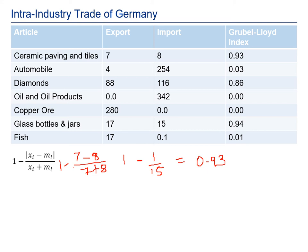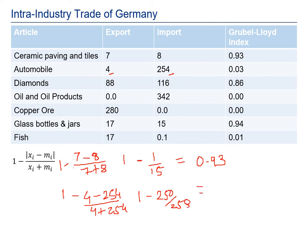For the automobile sector: exports are 4 and imports are 254. Applying the formula: 1 − |4 − 254| / (4 + 254) = 1 − 250/258. Dividing 250 by 258 gives approximately 0.97, and the answer comes to 0.03.